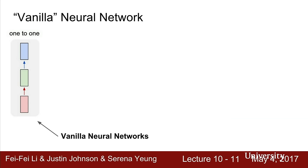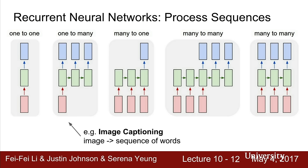That was a brief recap of CNN architectures from last lecture. Today we're moving to one of my favorite topics: recurrent neural networks. So far in this class, all our architectures receive a fixed-size input like an image, feed it through hidden layers, and produce a single output like classification scores. But in some contexts in machine learning, we want more flexibility in the types of data our models can process.